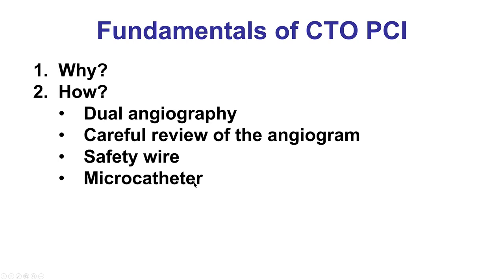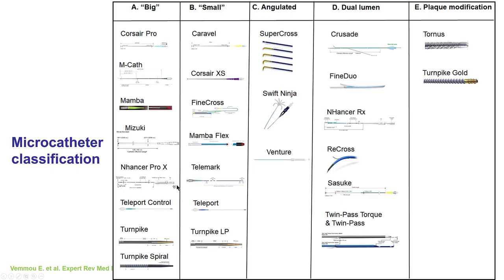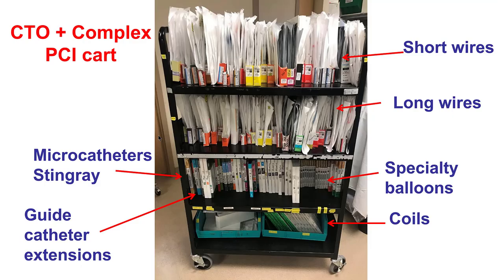CTO crossing attempts should be performed using a microcatheter. There are several kinds — single-lumen, dual-lumen, and angulated microcatheters of varying sizes. The bottom line is that in 2022, unless there are pressing financial considerations, CTO-PCI should be done using a microcatheter to help guide the wire, allow reshaping, and increase the penetrating force of the guidewire. It is best to have a dedicated CTO cart with wires and microcatheters, which makes things faster during the procedure.